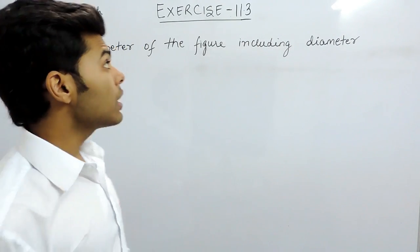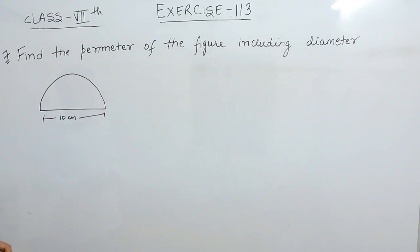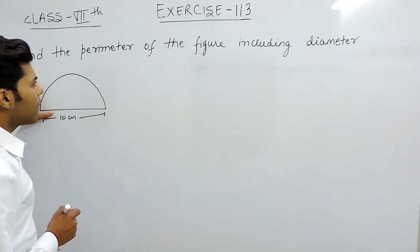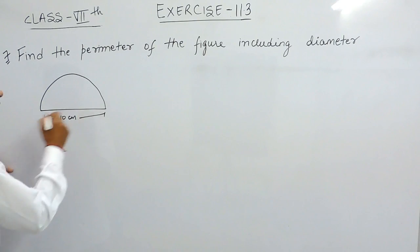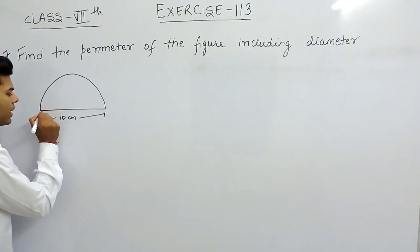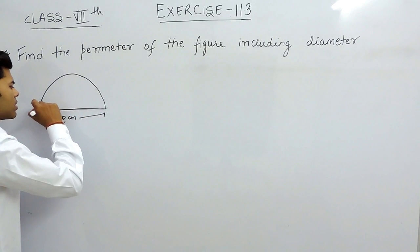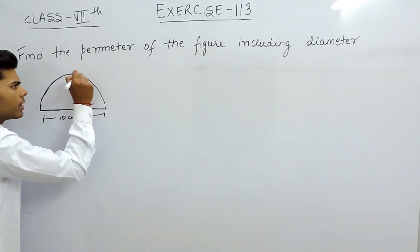Hello everyone, now we will do the 7th question of exercise element 0.3. In this question we have to find the perimeter of this figure including this diameter. So the perimeter will be equal to this plus this.